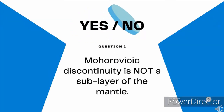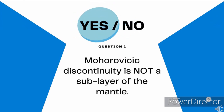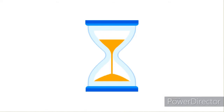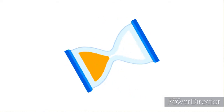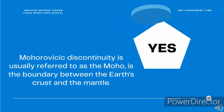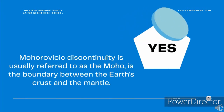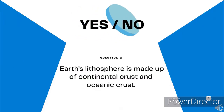Yes or no? Question number 1. Mohorovicic discontinuity is not a sub-layer of the mantle. Yes or no? The correct answer is yes. Mohorovicic discontinuity is usually referred to as the Moho. It's the boundary between the Earth's crust and the mantle.